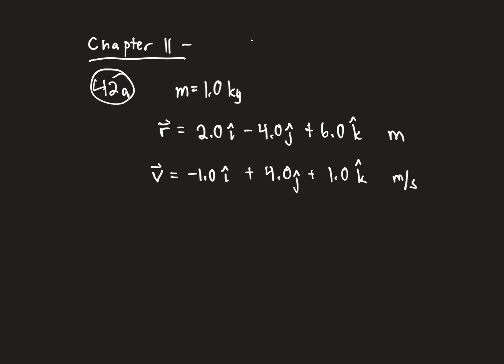There is also a force on the particle given by the vector f = 10.0 î + 15.0 ĵ newtons. Part a wants to know what is the angular momentum of the particle about the origin, so we need to find the angular momentum.